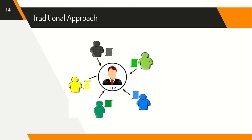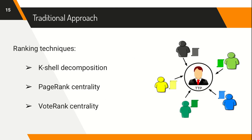Traditionally, the problem has been addressed in the trusted third-party model wherein each data owner discloses his share of the private data to a third party who is mutually agreed upon by all of them. The third party is trusted not to disclose their information. Having obtained the private data from all data owners, the third party ranks the nodes using standard ranking techniques such as K-shell decomposition, PageRank, and VoteRank centrality measures. The first and foremost limitation is that the trusted third party ends up learning the complete picture of the underlying network, which makes it difficult to find a party trusted by all and often ends up being a costly affair.